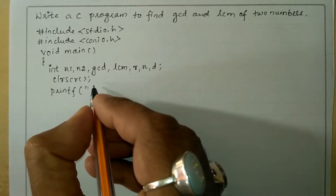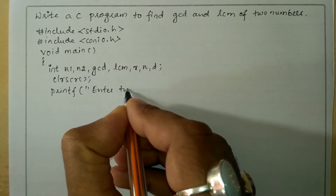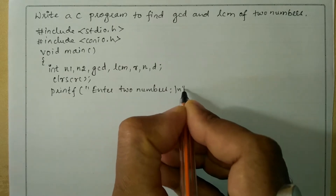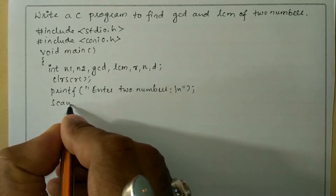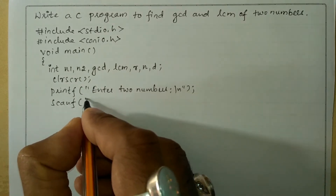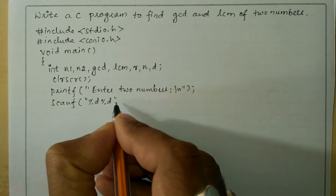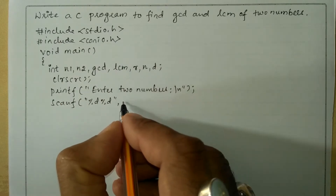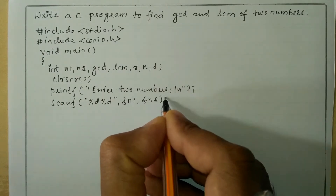Now we will ask the user to enter two numbers using a printf statement: printf("Enter two numbers\n"). Now we are going to receive two numbers from the user through the keyboard using scanf: scanf("%d %d", &n1, &n2).